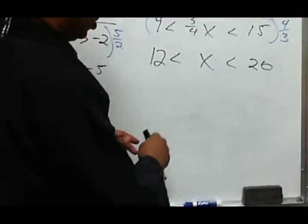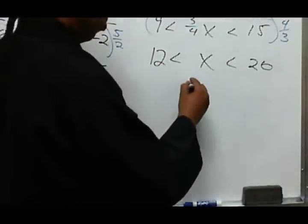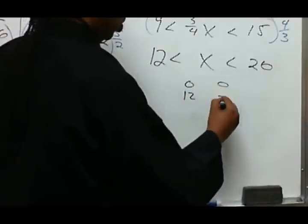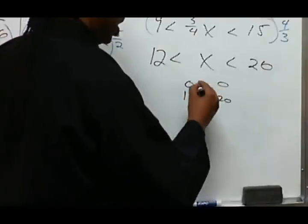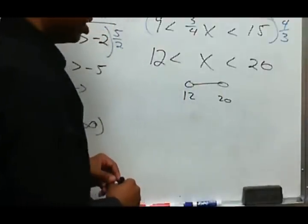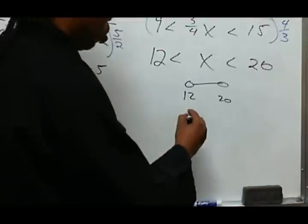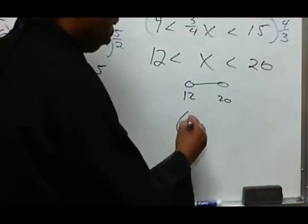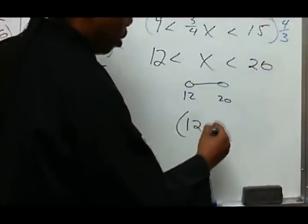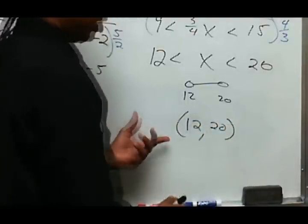So x is between 12 and 20. That's the solution. We're going to write this as a graph with open circles on 12 and 20 and a line segment between. The interval notation for this will be parentheses 12 comma 20, open parentheses.